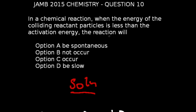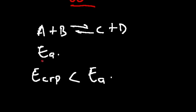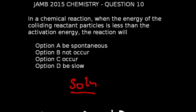Question 10 of JAM 2015 chemistry exams: In a chemical reaction, when the energy of the colliding reactant particles is less than the activation energy, the reaction will — activation energy (Eₐ) is the minimum energy required for a reaction to take place. For products to be formed, the energy of the colliding reactant particles must not be less than the activation energy; otherwise the reaction will not occur. So if the energy is less than the activation energy, the reaction will not occur — that is option B.